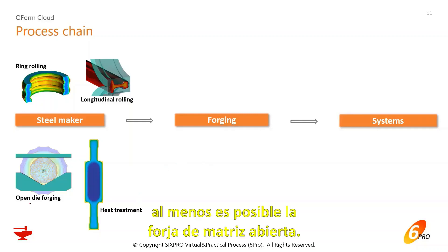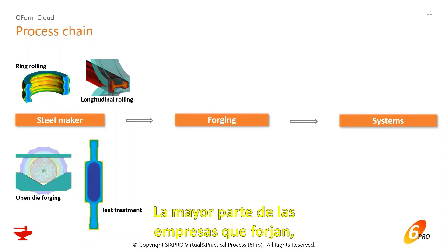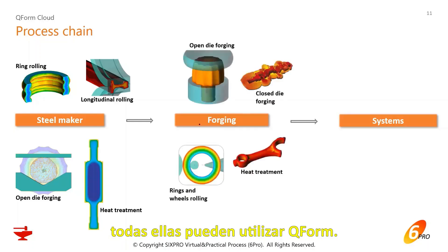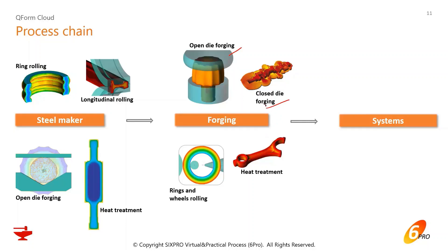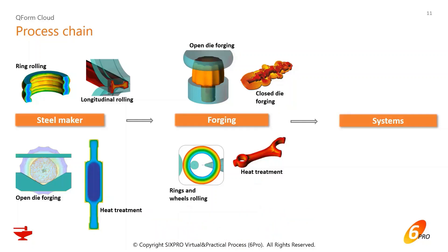All companies that conduct forging can use Keyform. They purchase a steel bar or ingot and can do open die forging and closed die forging, depending on the size of the part, the precision needed, and the equipment available. You can also conduct ring and wheel rolling and heat treatment, and the company purchasing those forged parts can conduct machining and heat treatment.